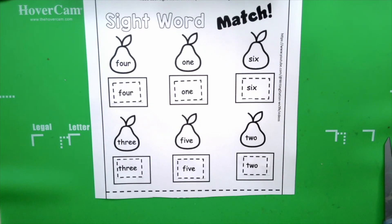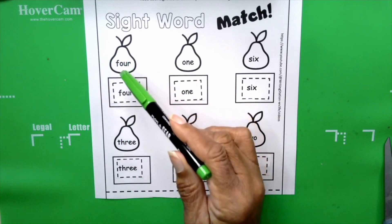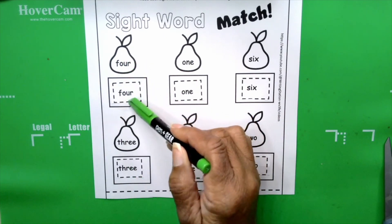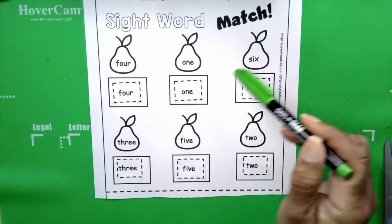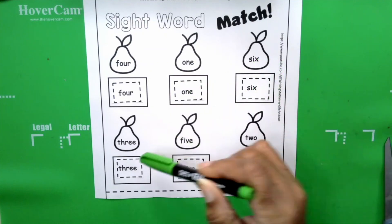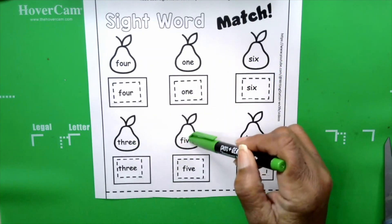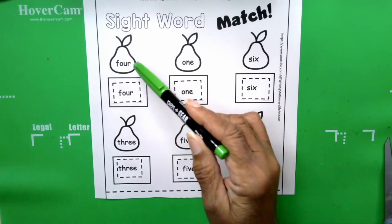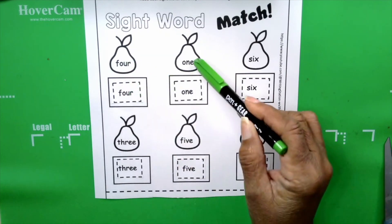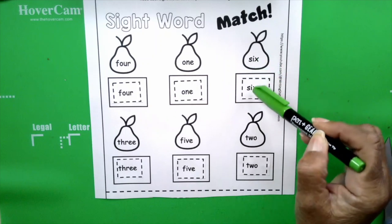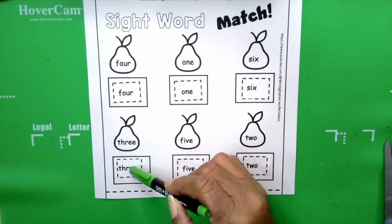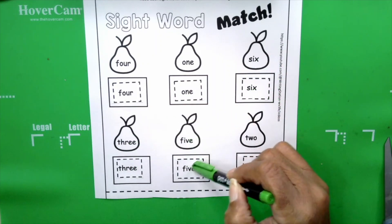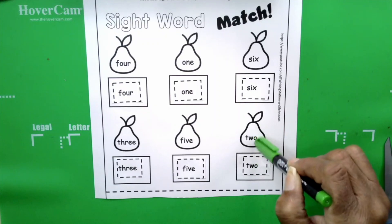Let's say our words. Repeat after me. Four. One. Six. Three. Five. Two. And let's see. Four and four. One and one. Six and six. Three and three. Five. And these two matches. Two and two.